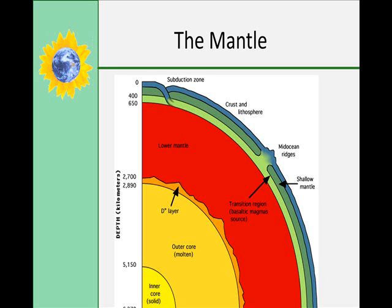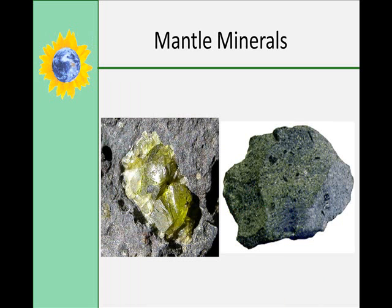The mantle is between 100 to 2900 kilometers deep. It is a layer of soft, mushy, silicate rock, and composes two-thirds of the mass of the Earth. All of these observations suggest that the mantle is composed mostly of the dark, dense, mafic minerals, olivine and pyroxene, and you can see two of those here.